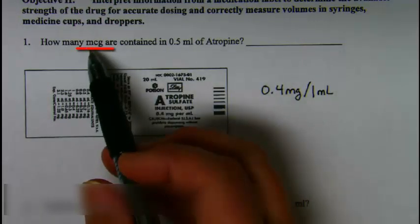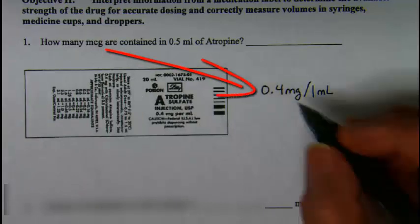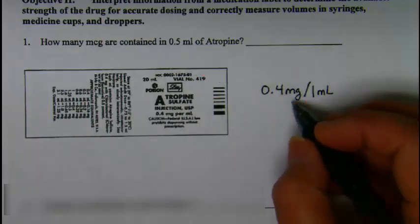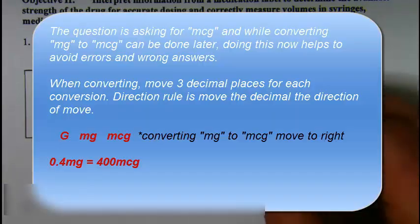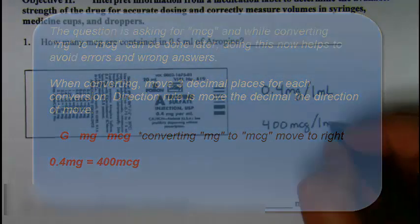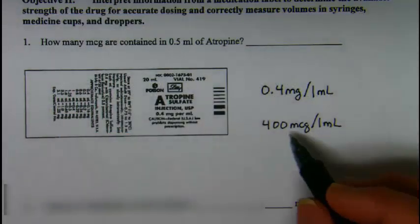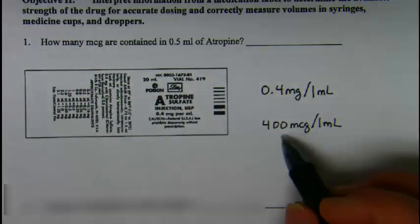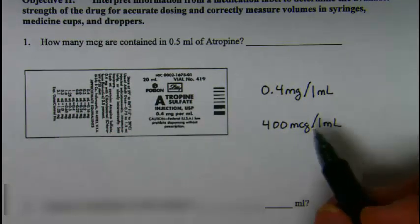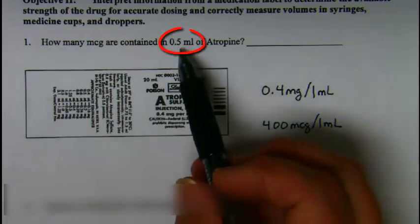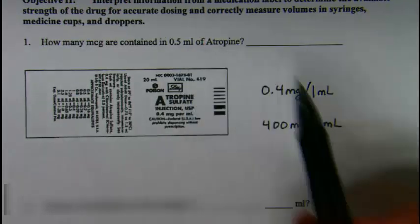Because my question is asking for micrograms, I'm going to go ahead and convert the milligram to microgram. So 0.4 milligrams is the same thing as 400 micrograms—still the same volume. The volume didn't change, only the label on the drug. Now that I know this, I can figure out how much this specific volume is equal to in drug.